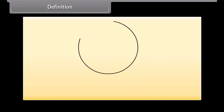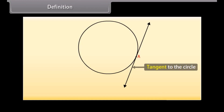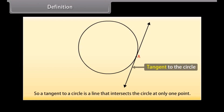And this is the third way we can draw a line and a circle. We can see that there is only one point A which is common to the line PQ and the circle. In this case, the line is called a tangent to the circle. So, a tangent to a circle is a line that intersects the circle at only one point.